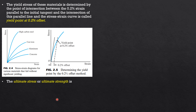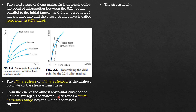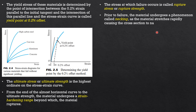The ultimate stress or ultimate strength is the highest ordinate on the stress-strain curve. From the end of the almost horizontal curve to the ultimate strength, the material undergoes strain hardening, beyond which the material ruptures. The stress at which failure occurs is called rupture stress or rupture strength. Prior to failure, the material undergoes necking, where the material stretches rapidly causing the cross section to narrow, as illustrated in the preceding slide.